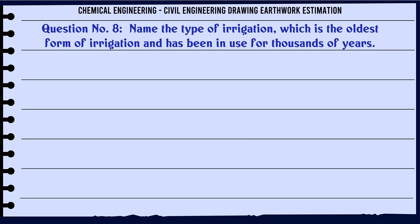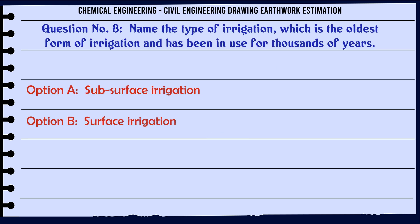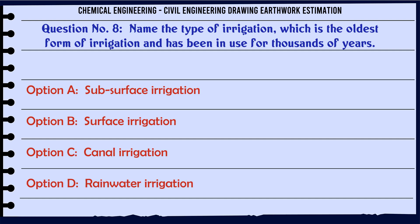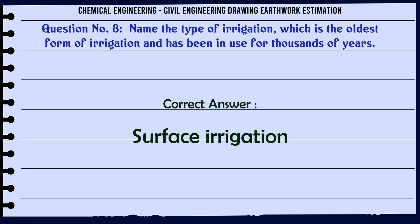Name the type of irrigation which is the oldest form of irrigation and has been in use for thousands of years. A. Subsurface Irrigation. B. Surface Irrigation. C. Canal Irrigation. D. Rainwater Irrigation. The correct answer is: Surface Irrigation.